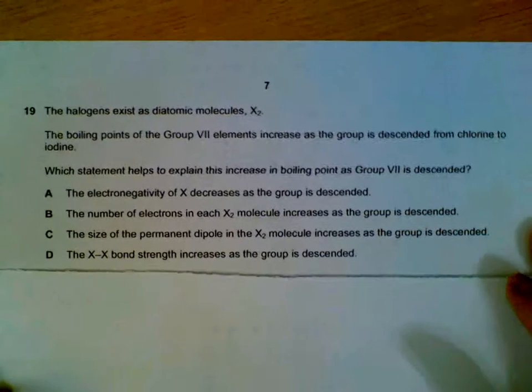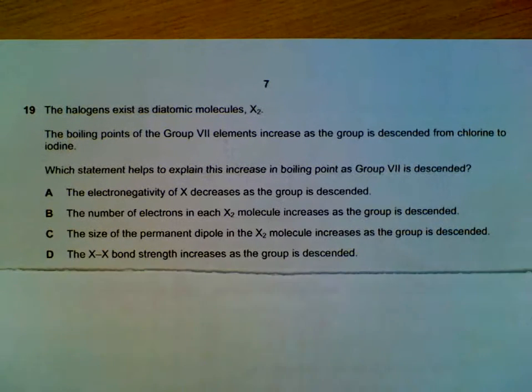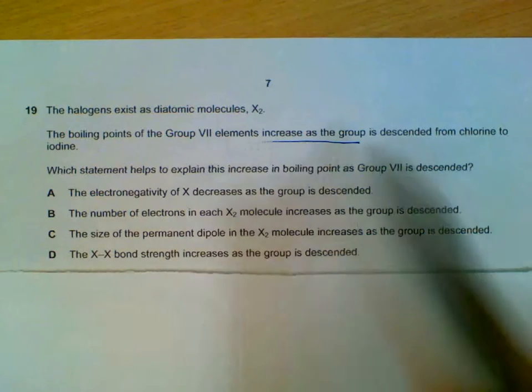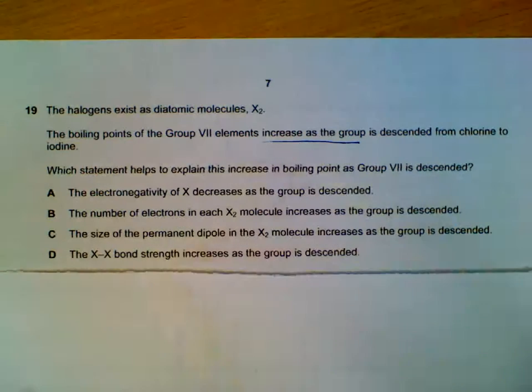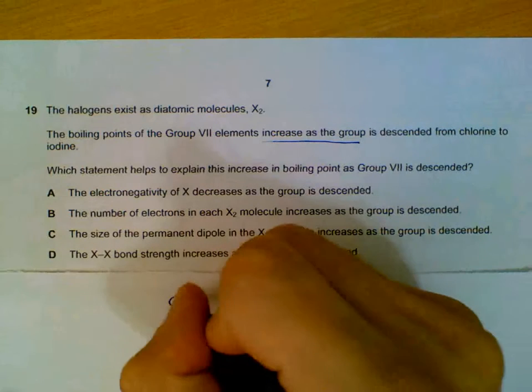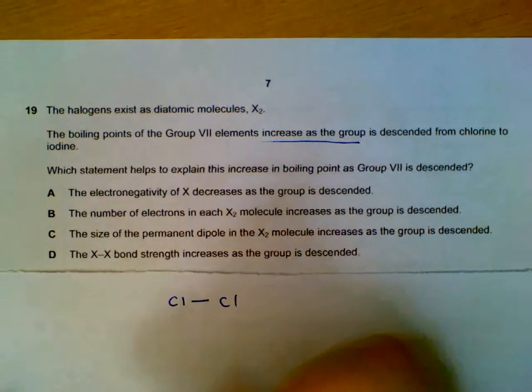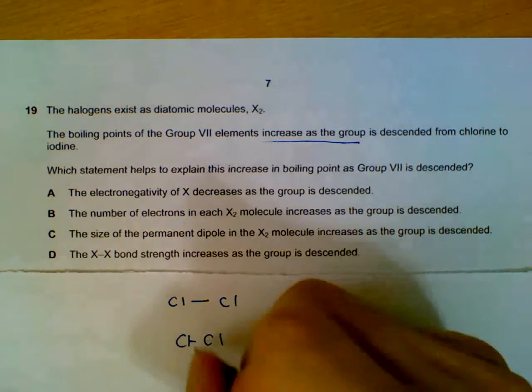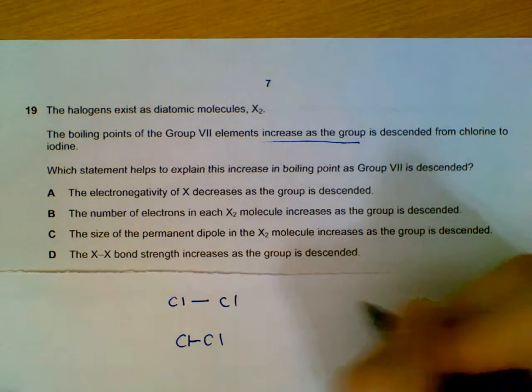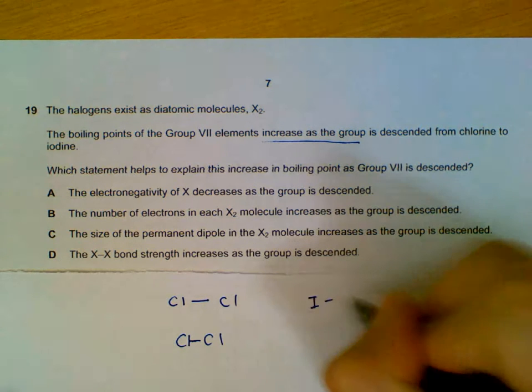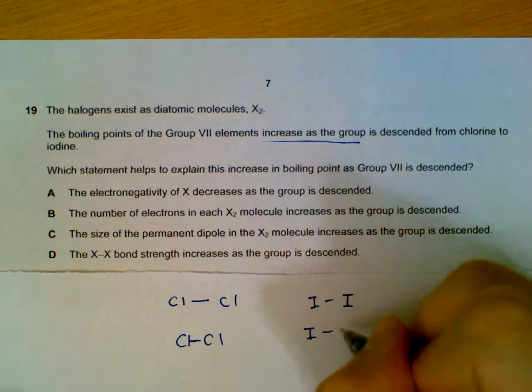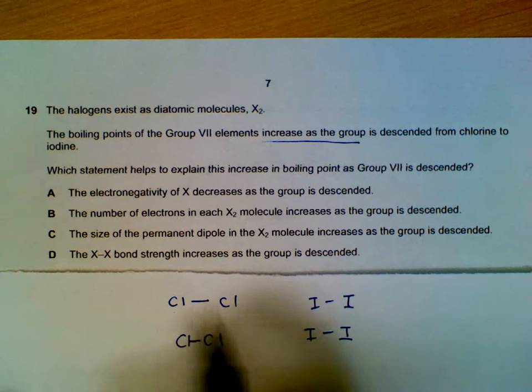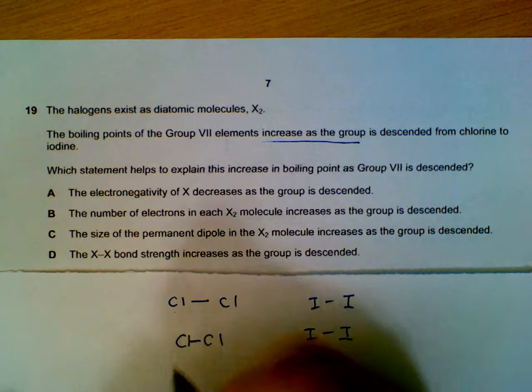Halogens exist as diatomic X2, and they are asking us to justify why the boiling point increases as we go down the group from chlorine all the way to iodine. So chlorine, bromine, iodine. I'll just use chlorine versus iodine. First of all, we must understand that they are non-polar molecules.